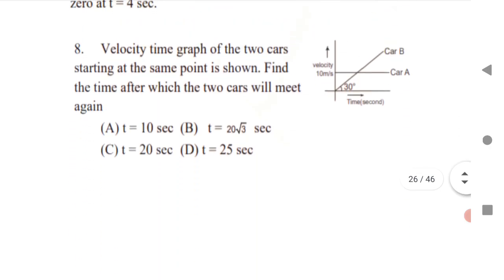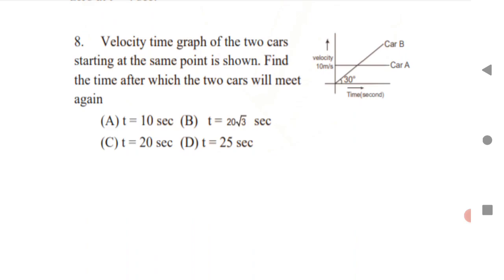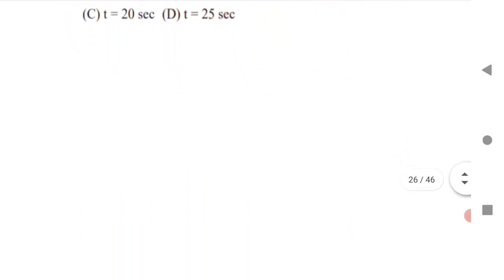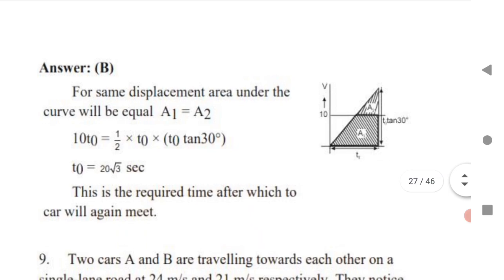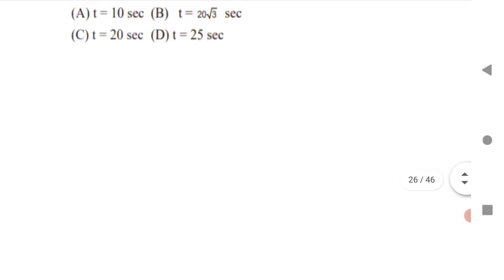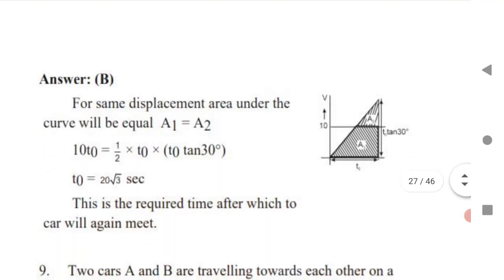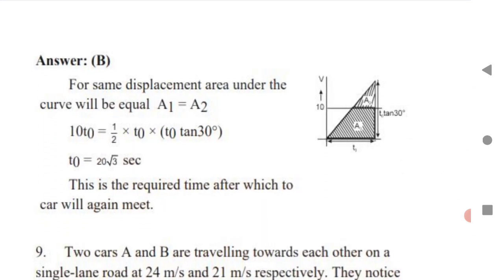Question 8: the velocity-time graph of two cars starting from the same point is shown. Find the time after which the two cars will meet again. From the graph, draw an additional triangle shape. The displacement is equal when area one equals area two. Area one and area two are given; use the triangle area formula (½ × base × height). Substitute the values of length and height to get the answer.